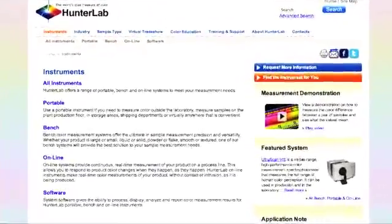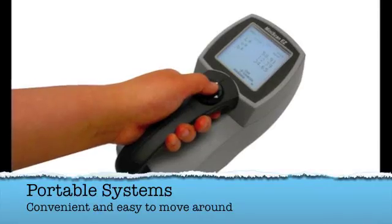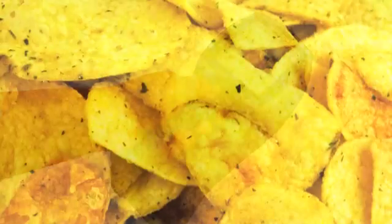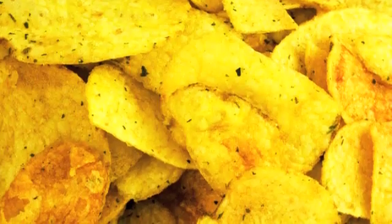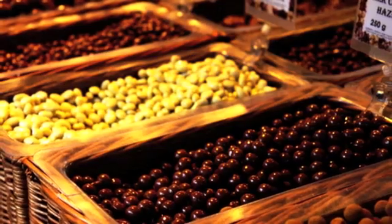There are three main categories of instruments. First are the portable systems, which allow you to measure color wherever you need. Run by battery power, they give you the ability to measure samples directly on the production floor, in storage areas, shipping departments, or anywhere else you can think of.